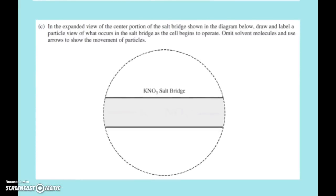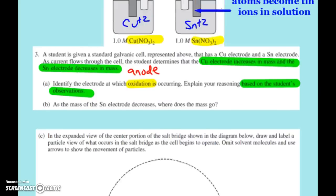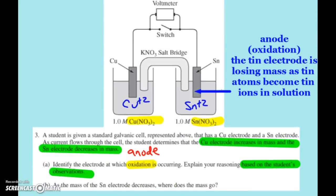So our next part says, here's an expanded view of the center portion of the salt bridge shown in the diagram below. So they want us to draw and label a particle view of what occurs in the salt bridge as the cell operates, omit solvent molecules, so we don't want any waters, and use arrows to show the movement of particles. So back in our diagram, we notice that we have a potassium nitrate salt bridge. So we want to know where's the potassium ion going and where's the nitrate ion going.